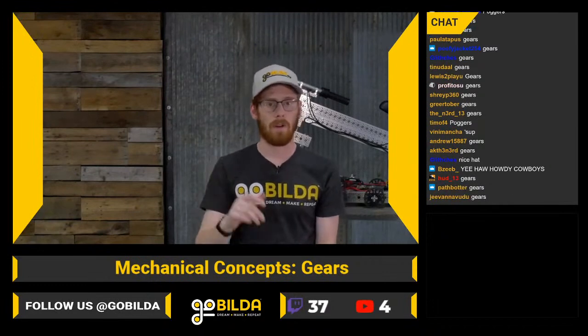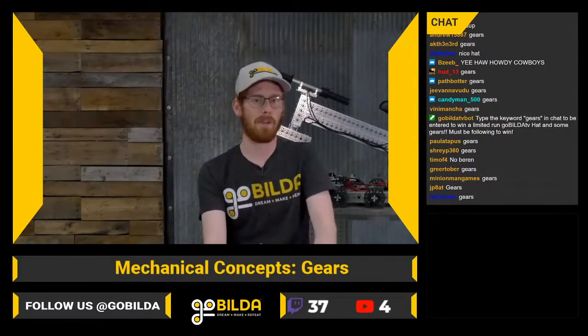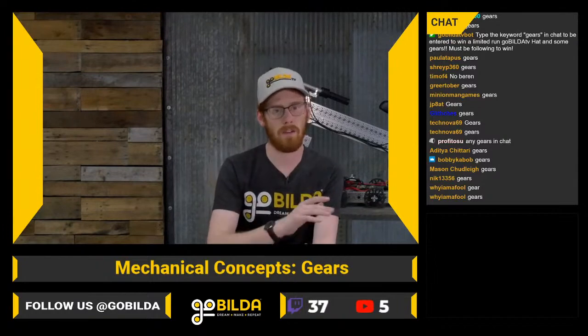Gears are a really important part of the goBUILDA ecosystem, especially when you need a ratio not available in a 5202 gear motor or when you're trying to change the location of your power output. Outside of FTC, gears are mostly used in a reduction — overdriving a system after a gearbox is kind of taboo. From an efficiency standpoint, you should choose a faster motor and gear it down afterward.